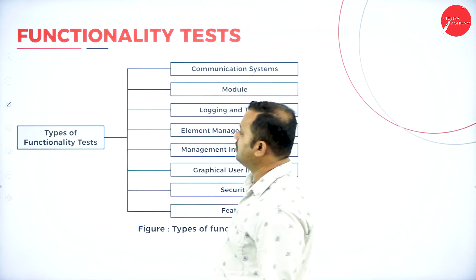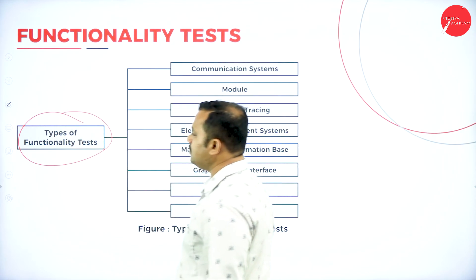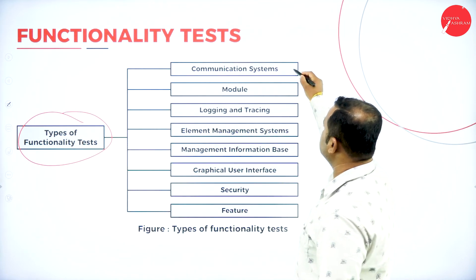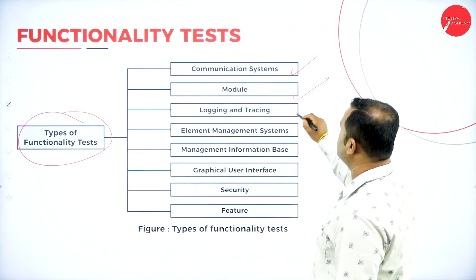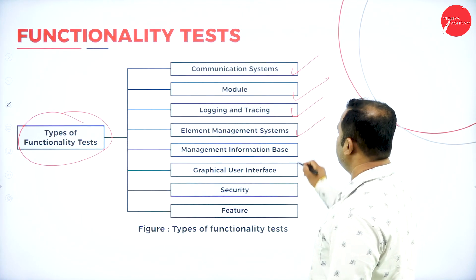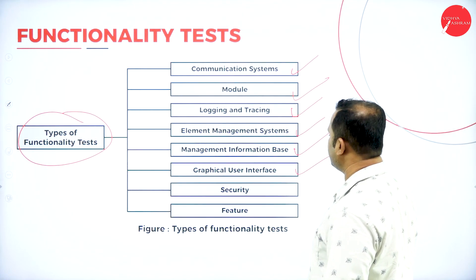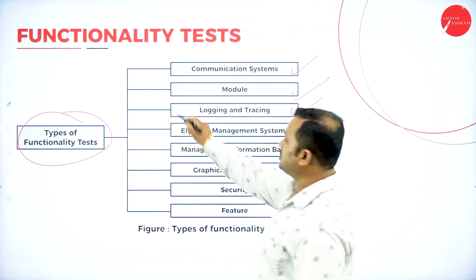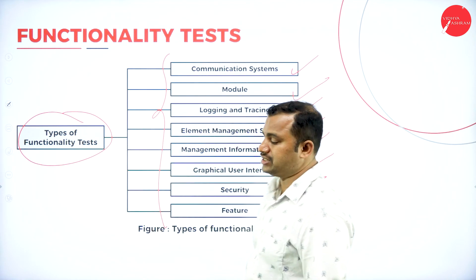Then we have the functionality test. Under functionality test, we have different types of tests: communication systems, modules, logging and tracing, element management systems, management information base, graphical user interface, security and feature. These are all the subsystems or subtests under this functionality test.